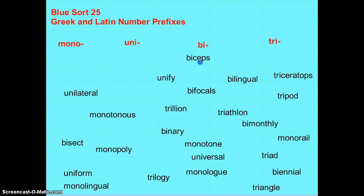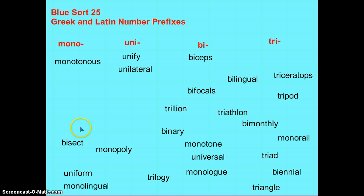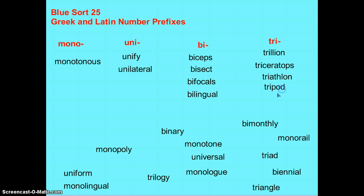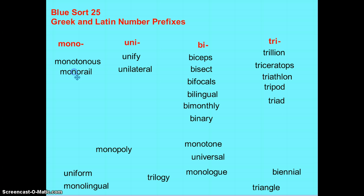Biceps — bi. Unify — uni. Unilateral. Monotonous — mono. Bisect. Bifocals. Trillion. Bi. Triceratops. Bilingual. Triathlon. Tripod. Bi-monthly. Binary. Triad. Monorail.